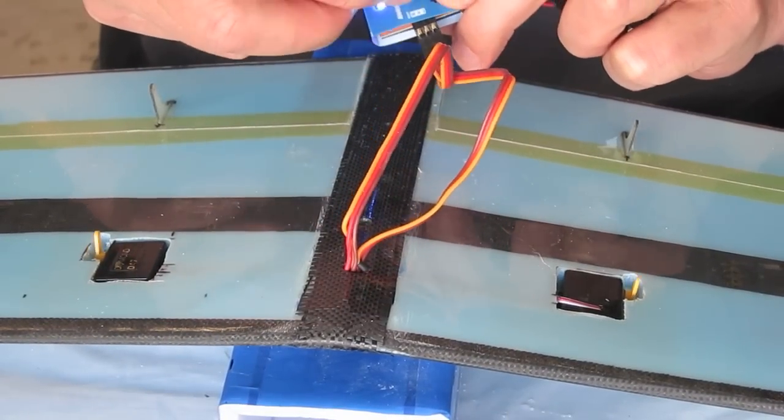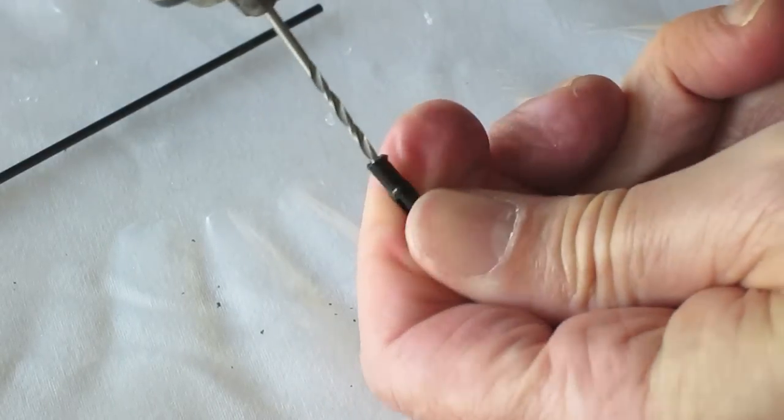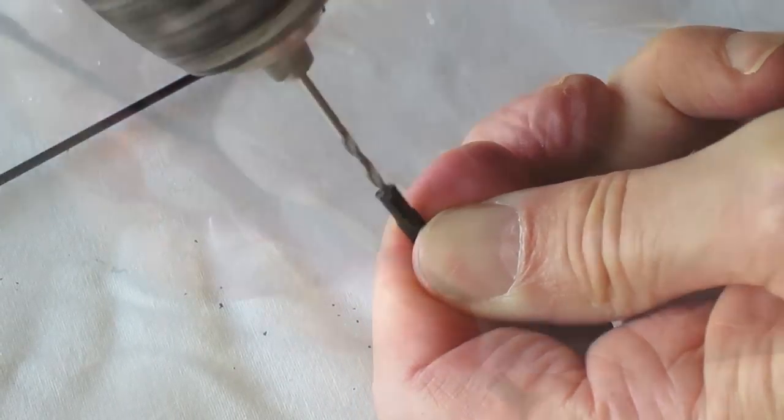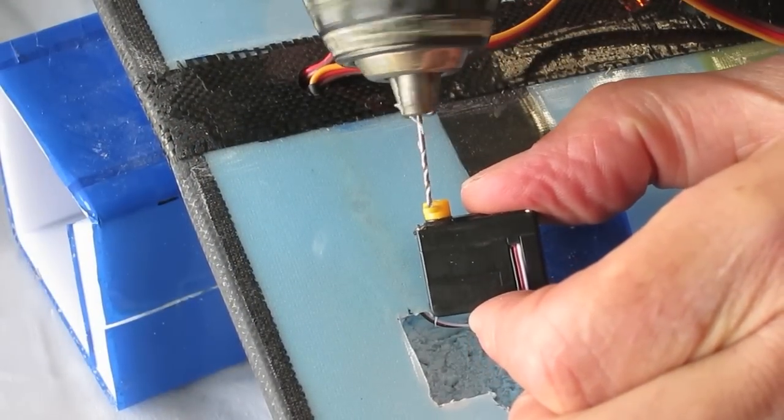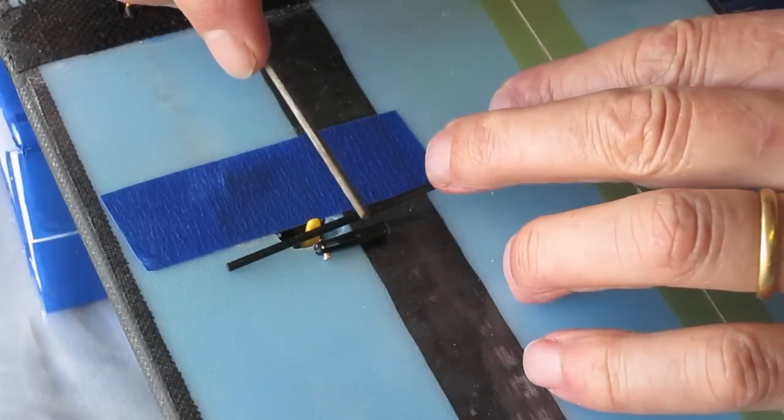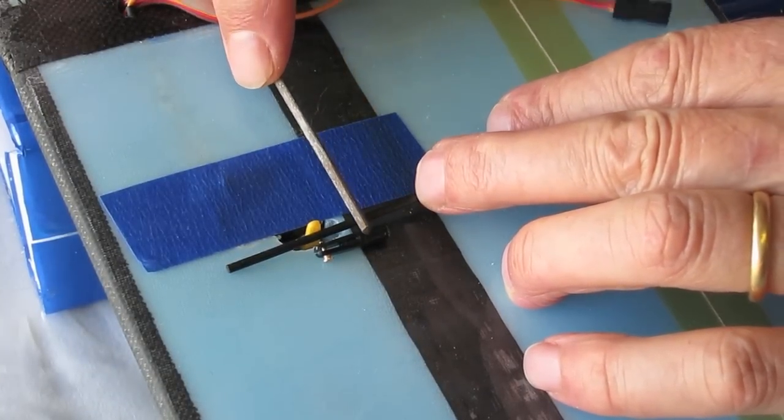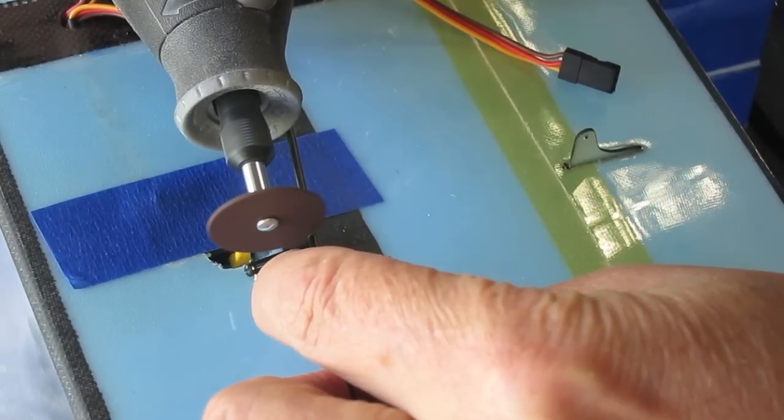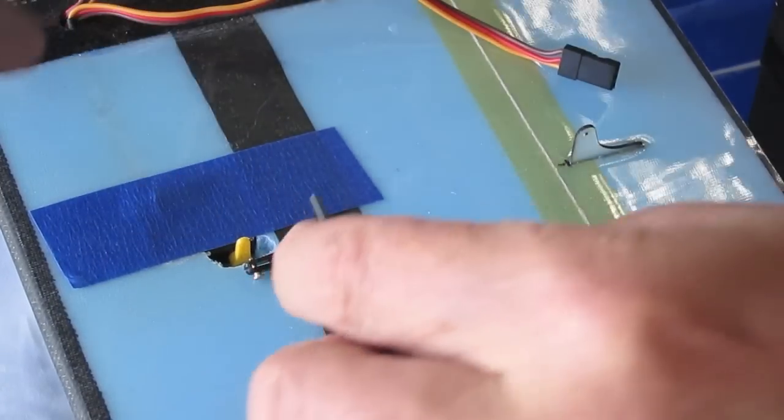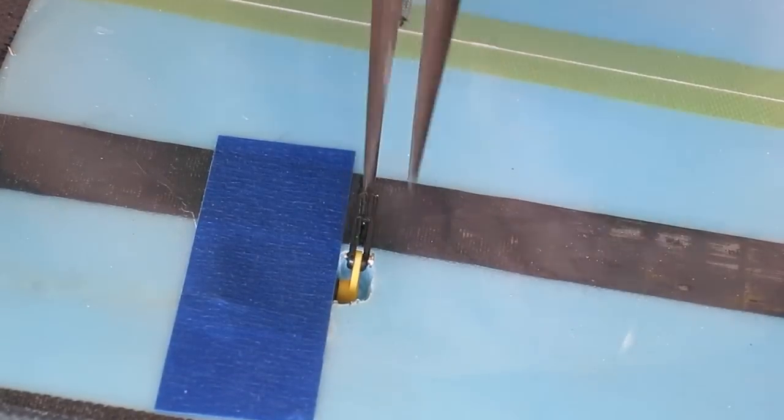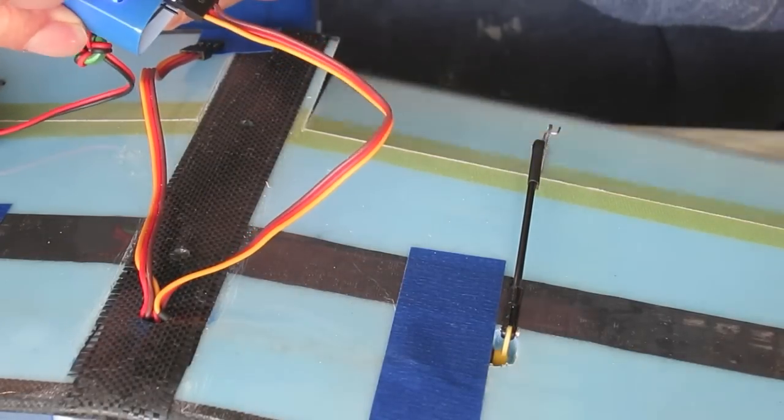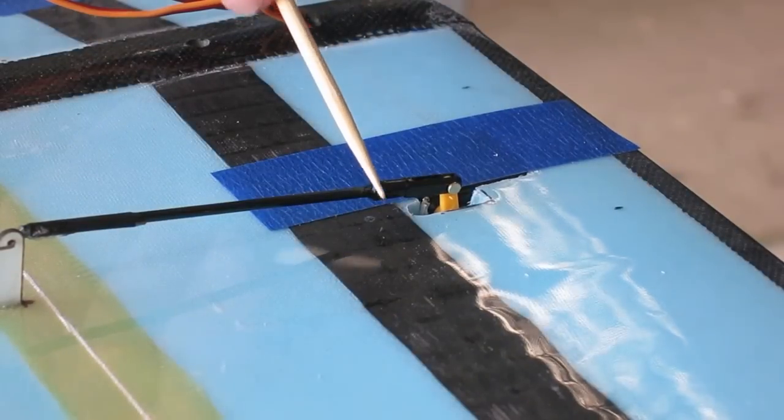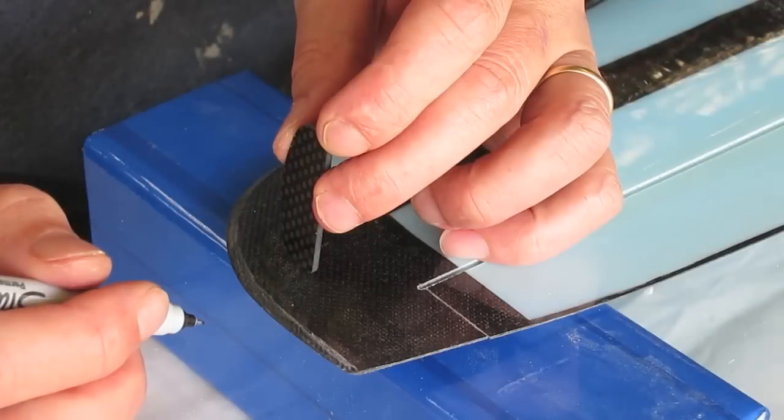Now centring up the servos to work out the correct length for the aileron push rods. Making sure the clevis fits on the end. Gluing out the servo arm. Now carefully cutting the carbon fibre rod to the right length. Fitting it all together, making sure it works okay. Once I've got the right length by sliding that clevis backwards and forwards I can put some CA glue on there.